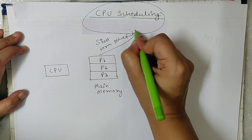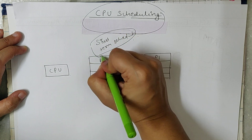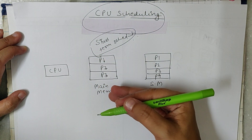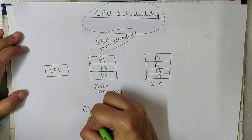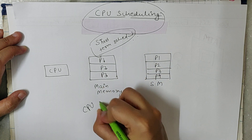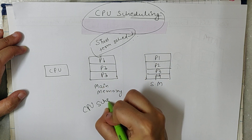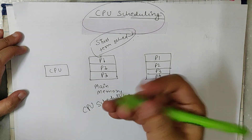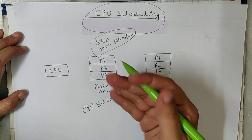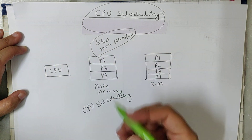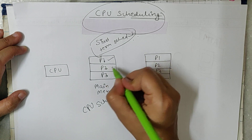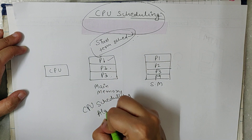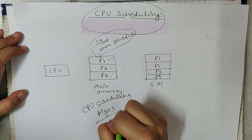The short-term scheduler performs CPU scheduling. But on what basis? For that, we use CPU scheduling algorithms, which define the criteria for giving the CPU to a process first.